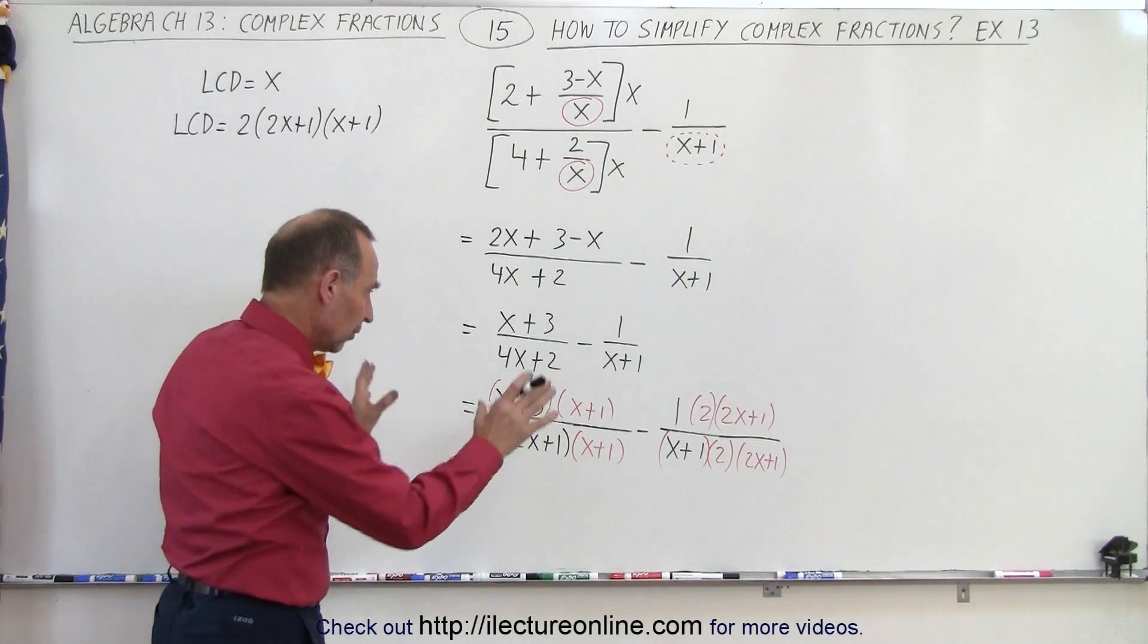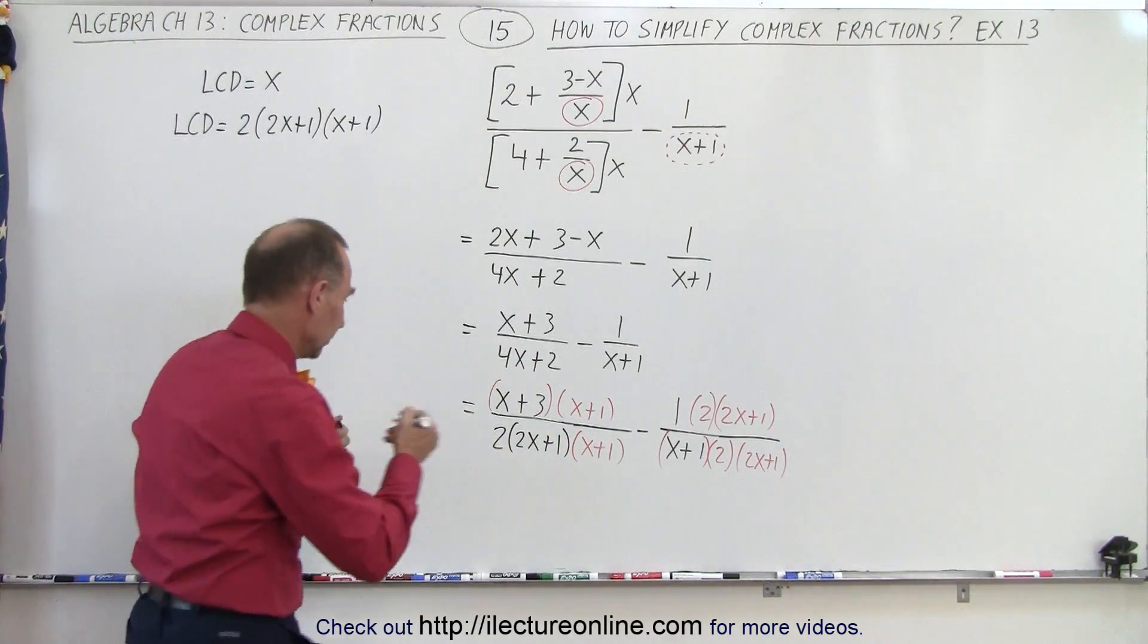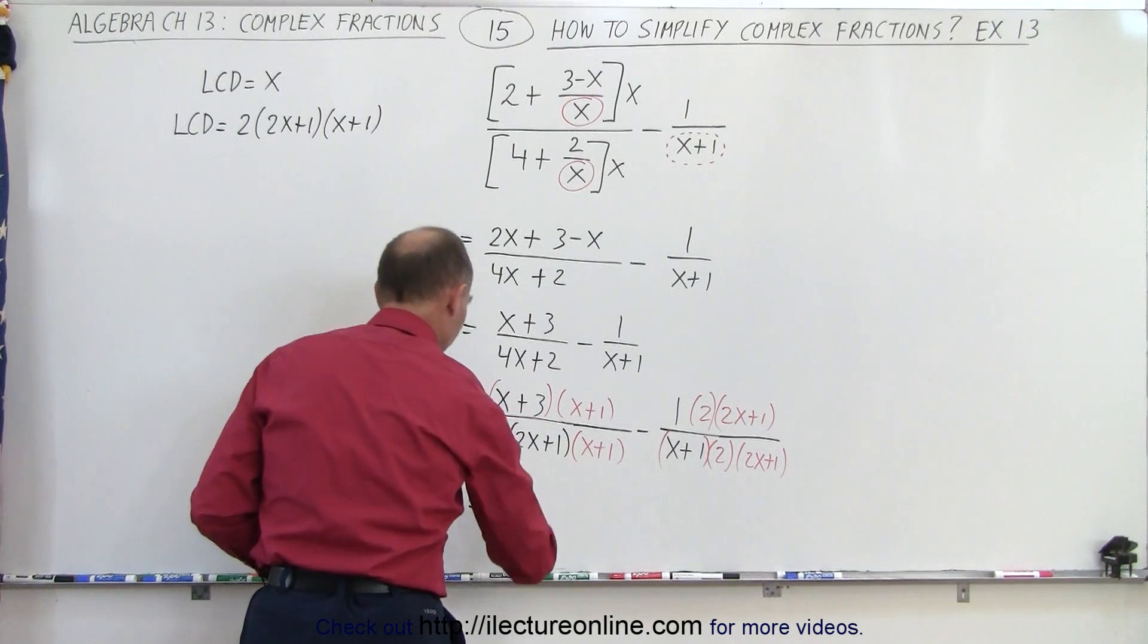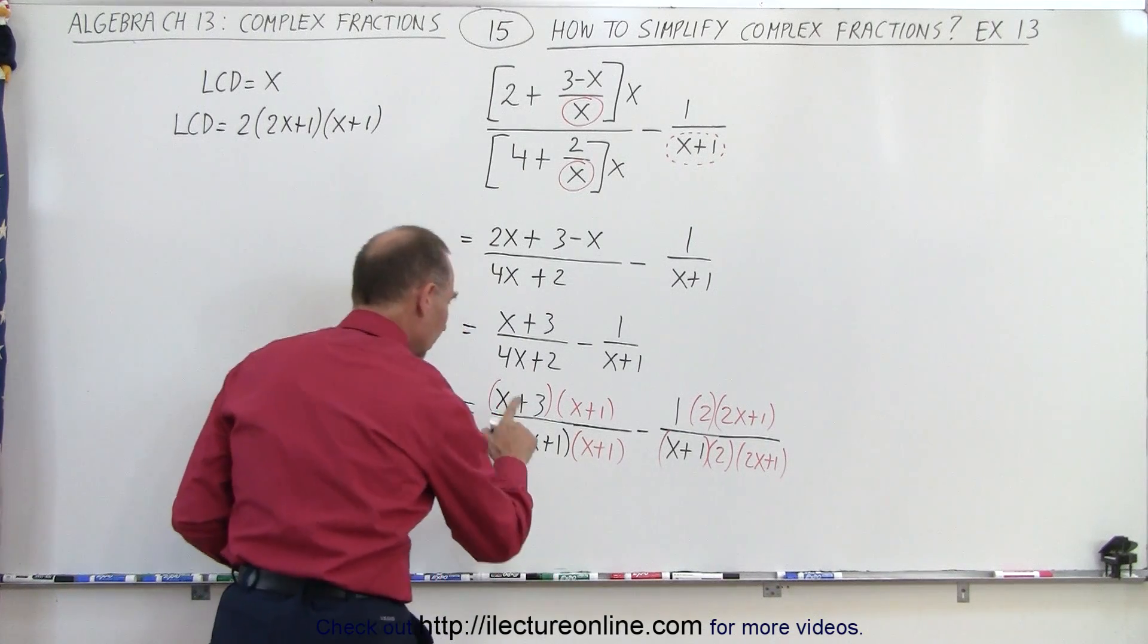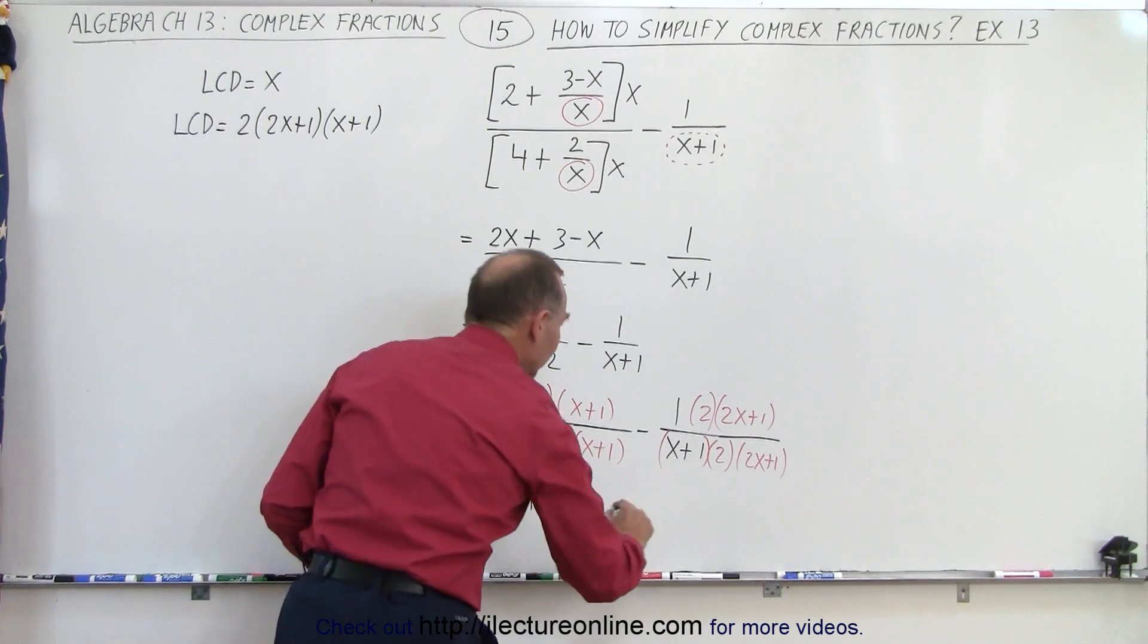Here at this point we can subtract the numerators and write it all over the same common denominator. So let's go ahead and do that. So in this case we get x squared plus 4x plus 3 minus in this case we get 4x plus 2.